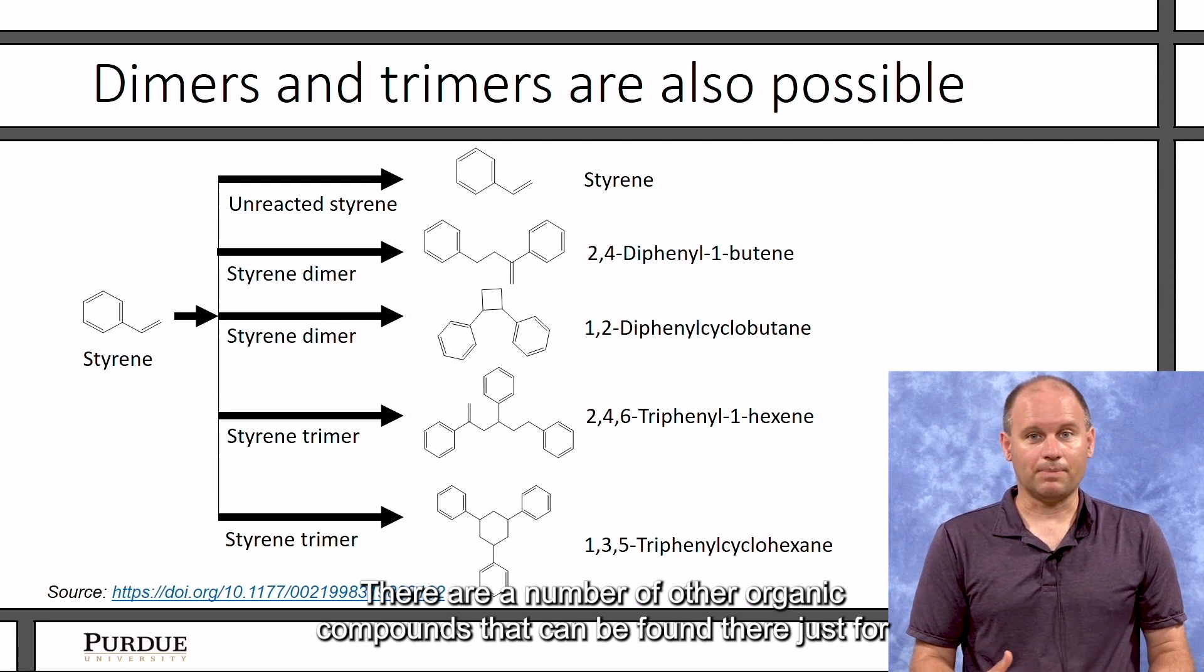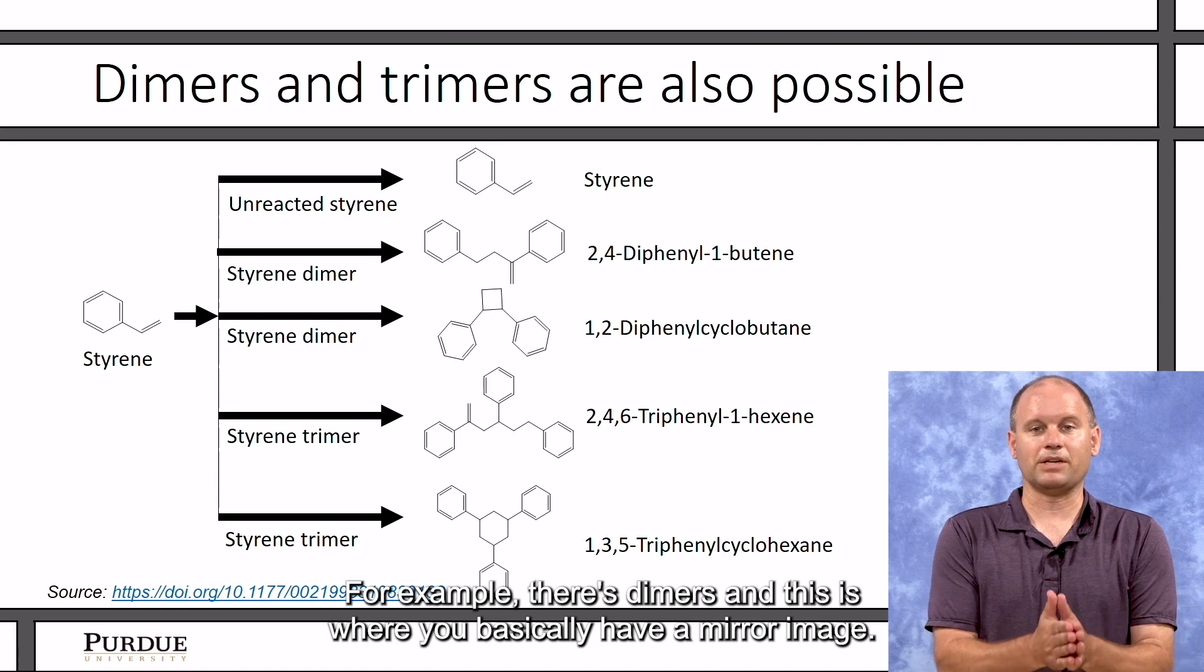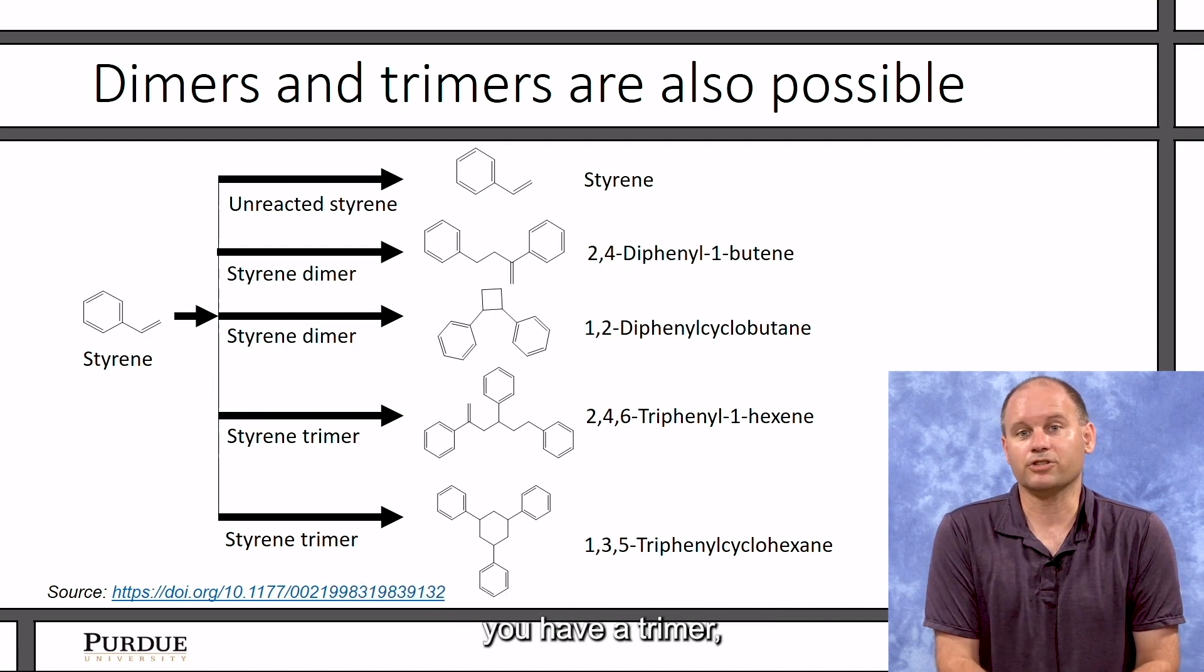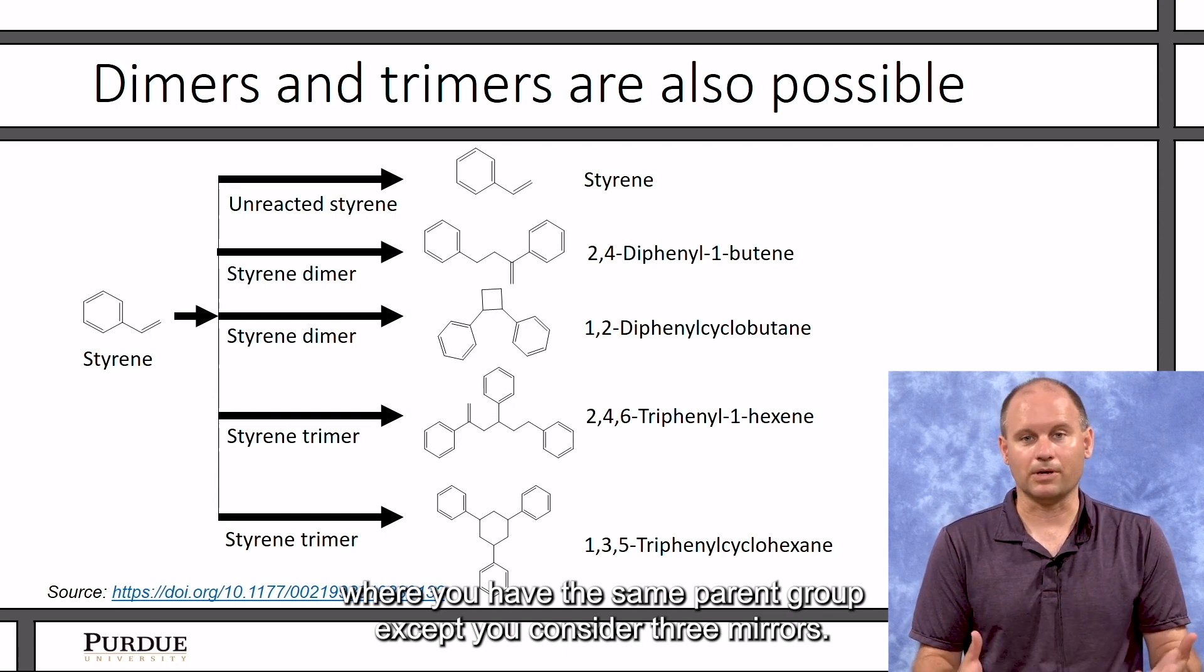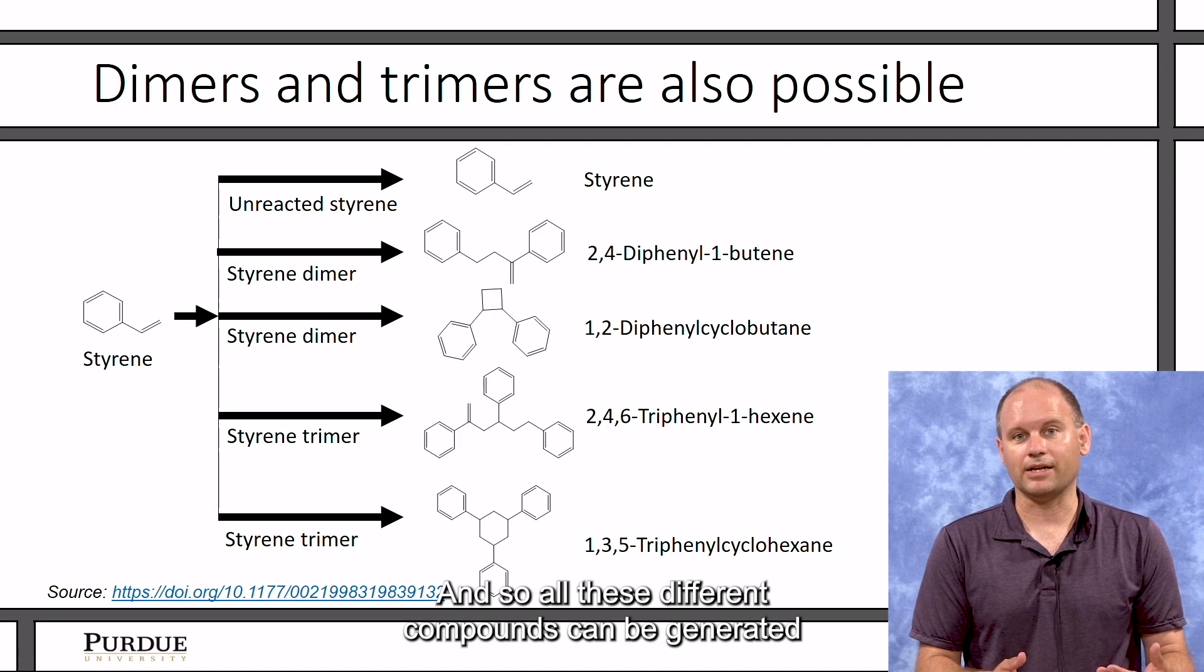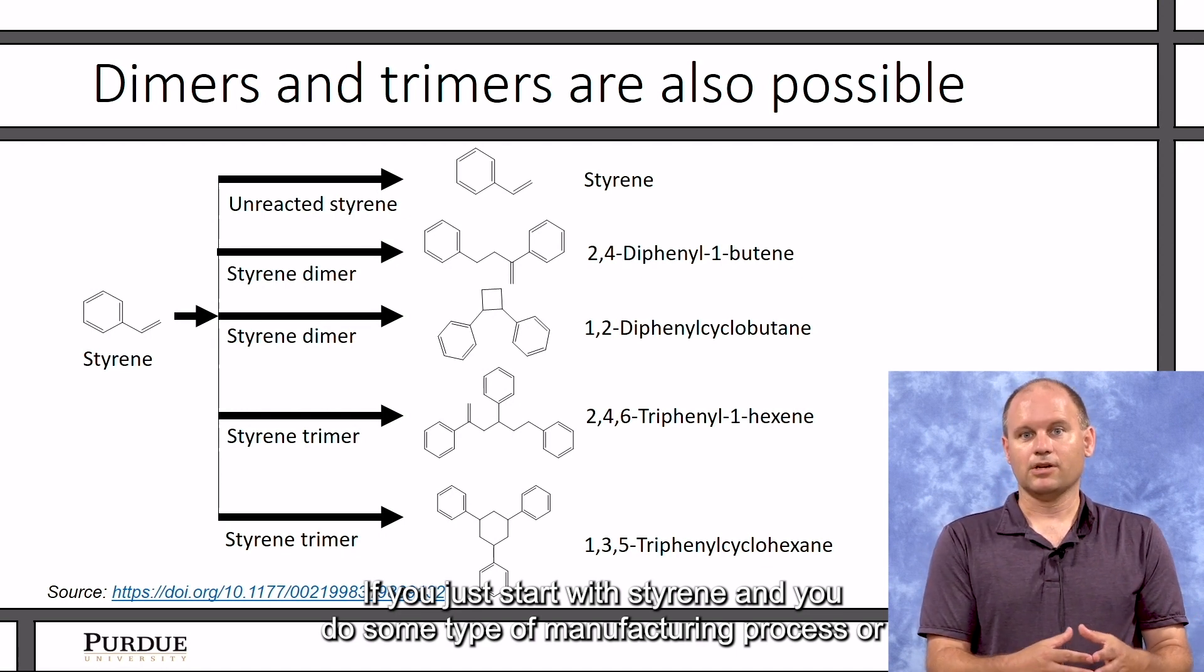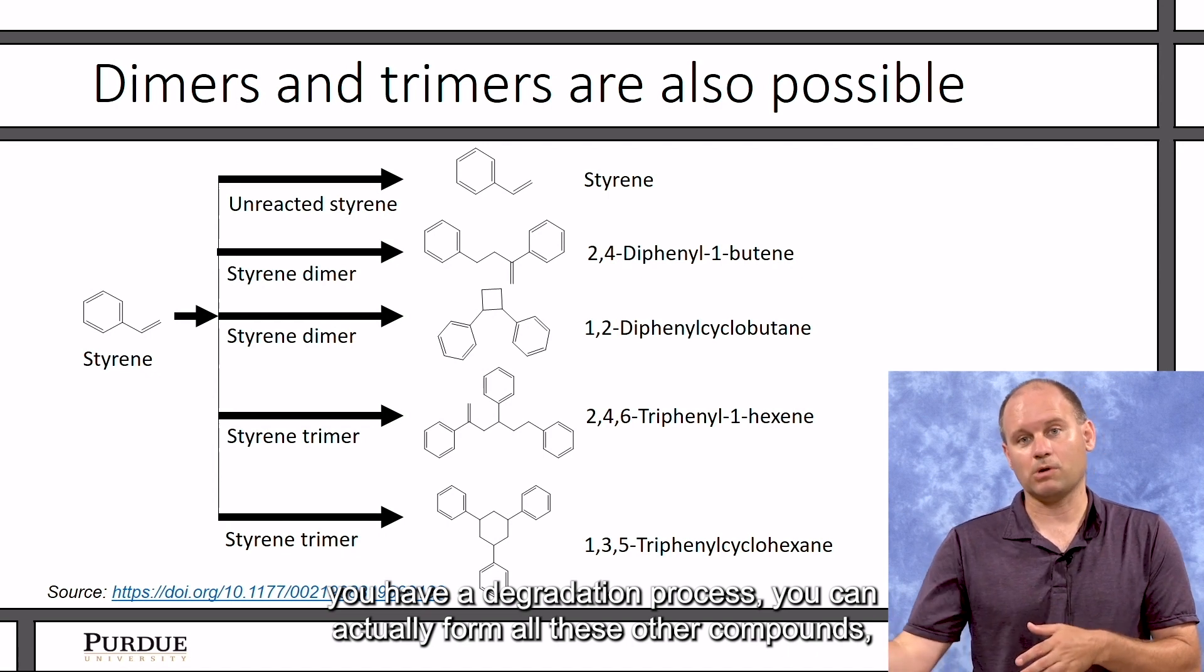There are a number of other organic compounds that can be found there. Just for styrene, for example, there's dimers—and this is where you basically have a mirror image where you have the same parent group on each side of the mirror. That's a dimer. Or you have a trimer where you have the same parent group except you consider three mirrors. And so all these different compounds can be generated just from the starting compound. So if you just start with styrene and you do some type of manufacturing process or you have degradation process, you can actually form all these other compounds.